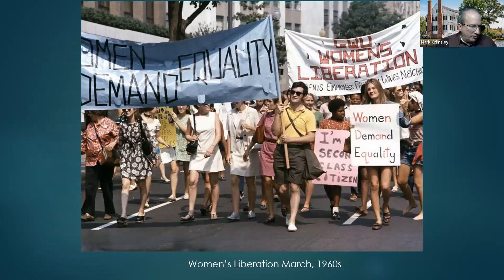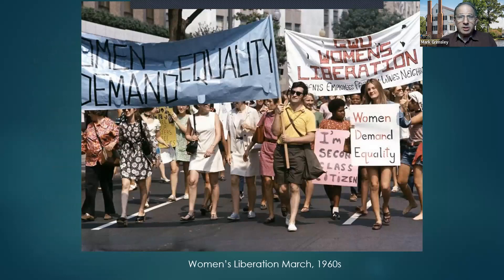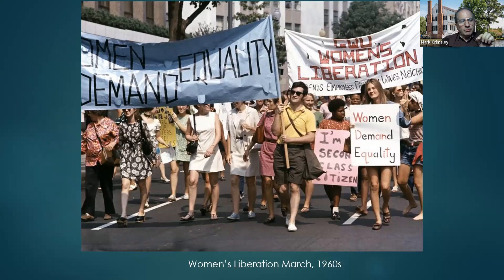Now let's start off with the social movement from which women's history emerged as a field. This was the so-called second wave of feminism of the 1960s through the 1980s. The first wave focused primarily on gaining for women the right to vote. The second wave of feminism focused on securing equality for women under the law, so there was this sort of formal political element that continued.